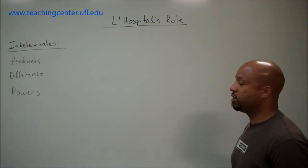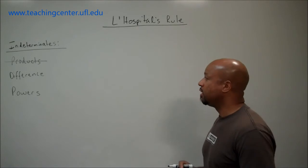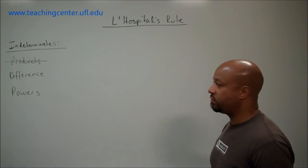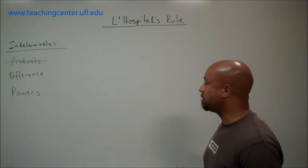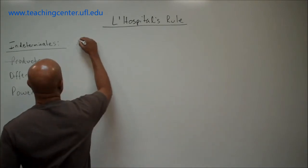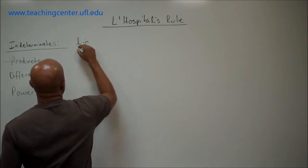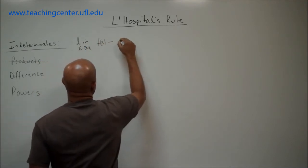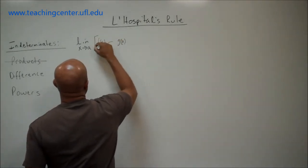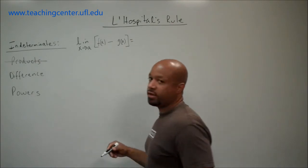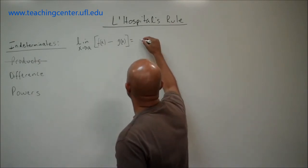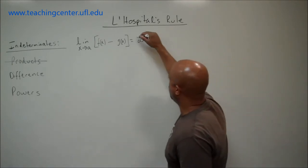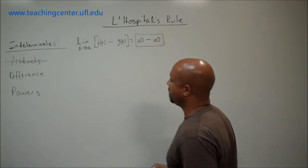Just as there was a situation where we encountered indeterminate products when evaluating limits, you may also encounter what we call indeterminate difference form. Basically, if you have some limit as x approaches a of f(x) minus g(x), and after you evaluate this limit you get infinity minus infinity, we call this the indeterminate difference form.